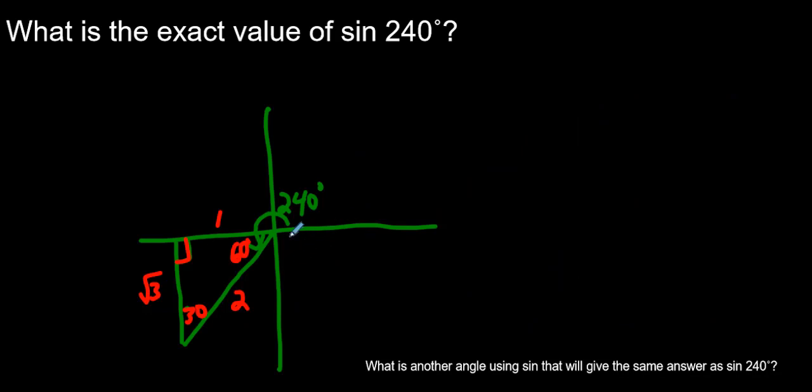So what we can say here is that the exact value of the sine of 240 will be, sine is going to be opposite over hypotenuse, root 3 over 2. Is it positive or negative? C, A, S, T. Only tangent is positive in this quadrant. Sine is going to be negative here. Now we've finished that question.